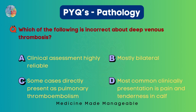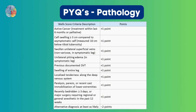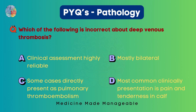Which of the following is incorrect about deep venous thrombosis? Clinical assessment is highly reliable; mostly bilateral; some cases directly present as pulmonary thromboembolism; or most common clinical presentation is pain and tenderness in the calf. Using the Wells criteria, clinical assessment is reliable, so option A is correct. DVT features unilateral pitting edema and calf swelling — not bilateral. Some cases do present as pulmonary thromboembolism, and calf pain is a Wells criterion. So the incorrect statement is option B: mostly bilateral.